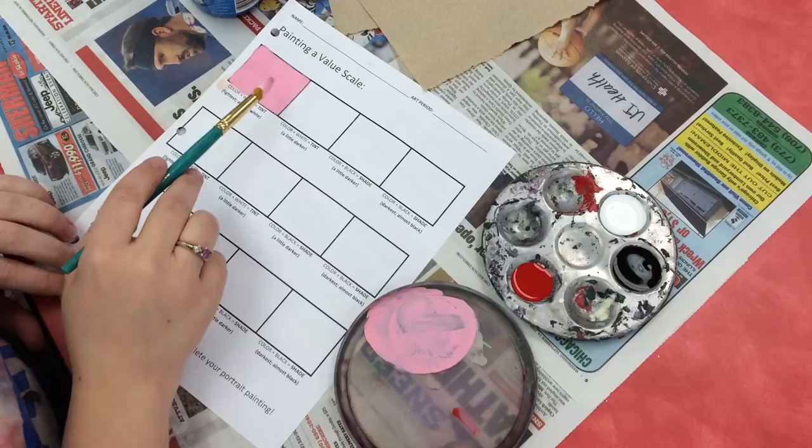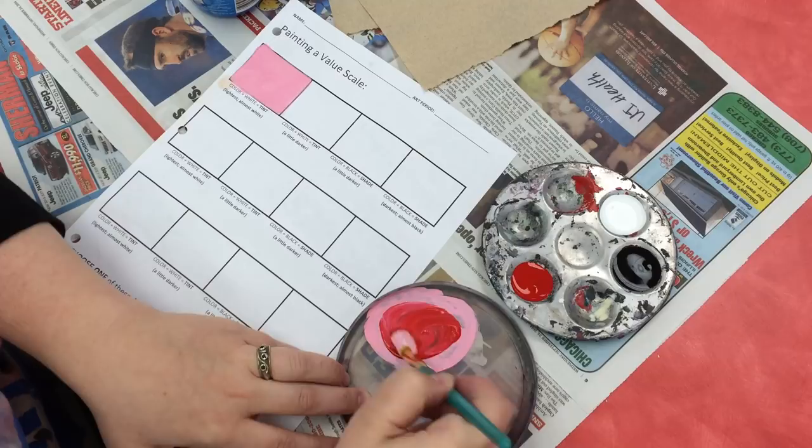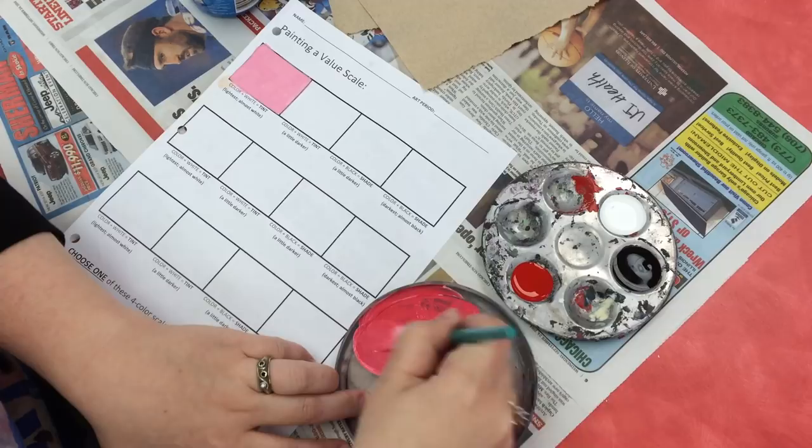Now I'm going to move on and do my next tint, which is still color plus white, so it just needs to be a little bit darker. Now I can just add a little bit more red to my existing mix, because this was already red and white, and I just added some more red to it.